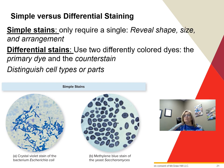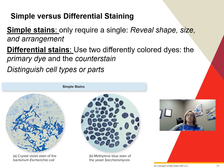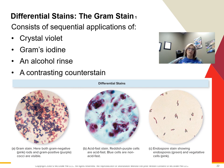Differential stains use two different colored dyes: a primary dye and a counterstain. We use these to distinguish different cell types — such as gram-positive or gram-negative — or different cell parts. These are more complex, have many steps, and require additional chemical reagents such as mordants to produce the desired effect. Gram-negative bacteria are often more virulent and can make you sick, though not always.